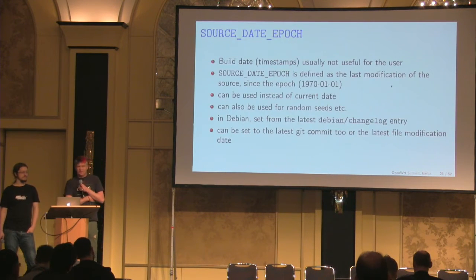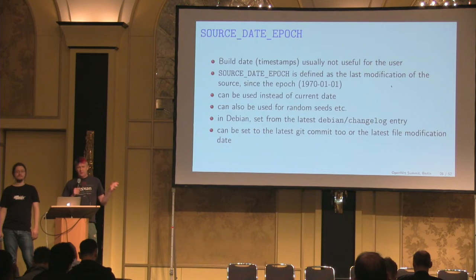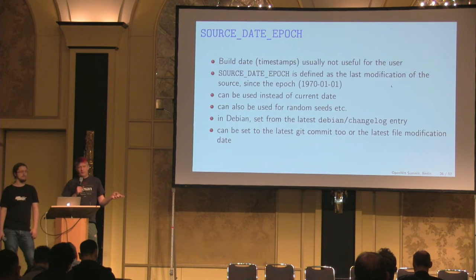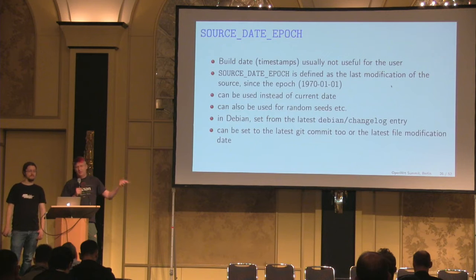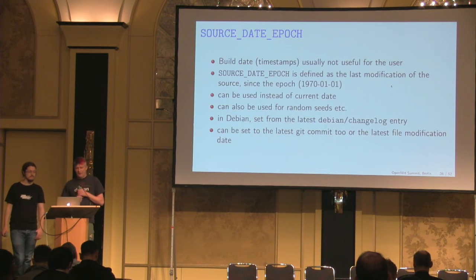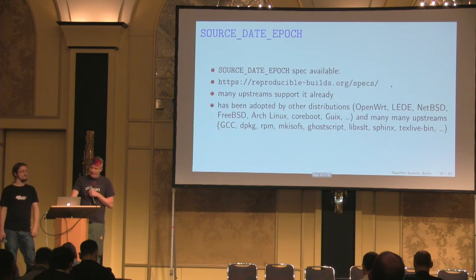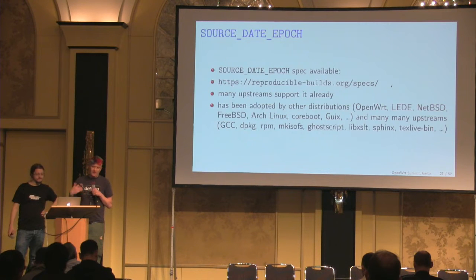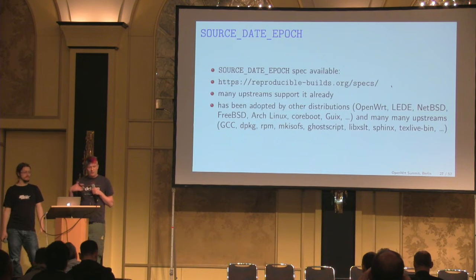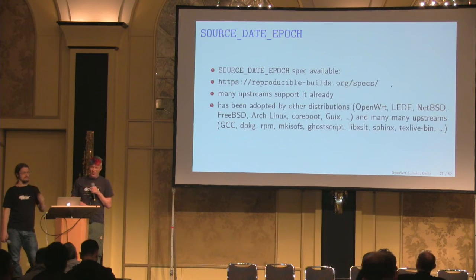For one problem we invented SOURCE_DATE_EPOCH, which is a specification — just two kilobytes of ASCII text. SOURCE_DATE_EPOCH is the last modification time of the source, because after that the source doesn't change anymore. So you can reset build timestamps with SOURCE_DATE_EPOCH because it is deterministic and will not change. You can also use it as a random seed. In Debian we derive it from the last Debian changelog entry; it could also be the last git commit or last file modification. The spec has been adopted by many distributions — OpenWRT, BSD, Arch Linux — but also GCC, dpkg, and Go. Many software projects have adopted SOURCE_DATE_EPOCH; it's about one and a half years old.